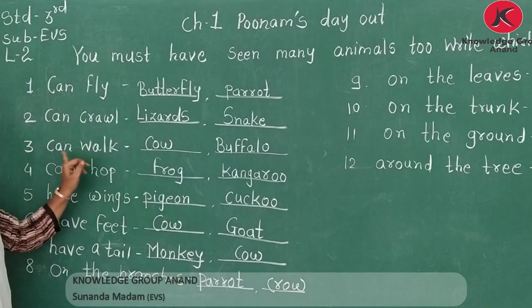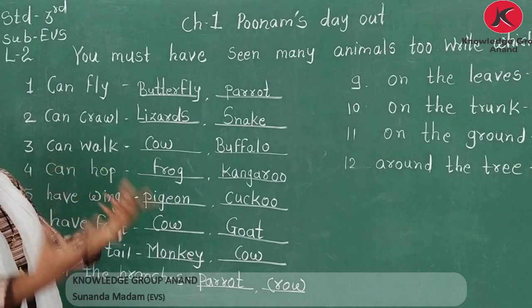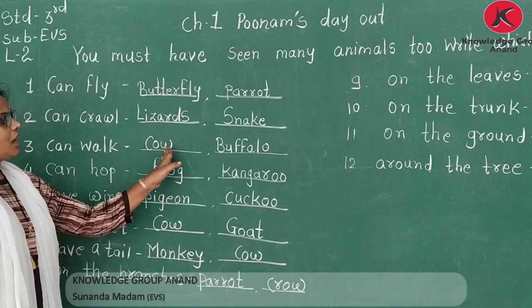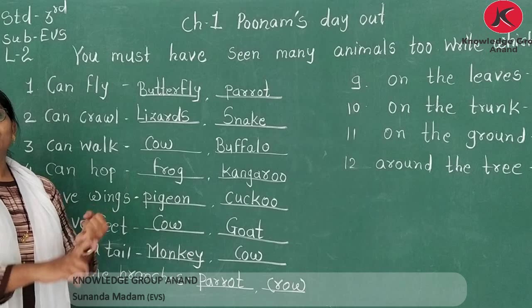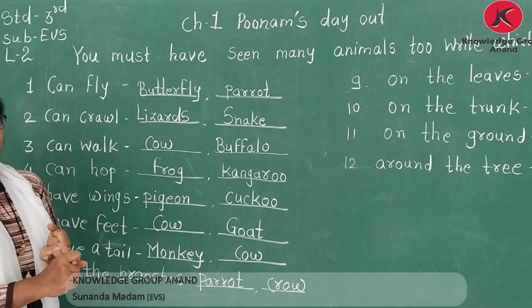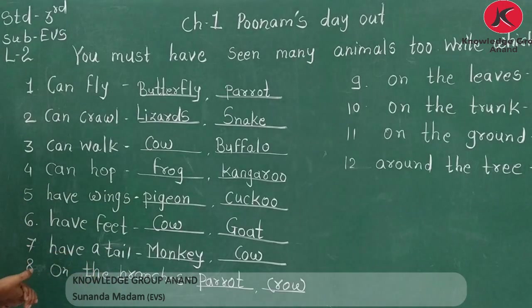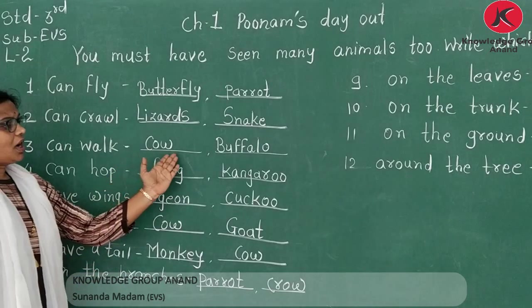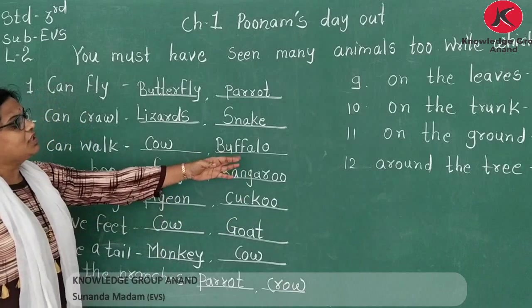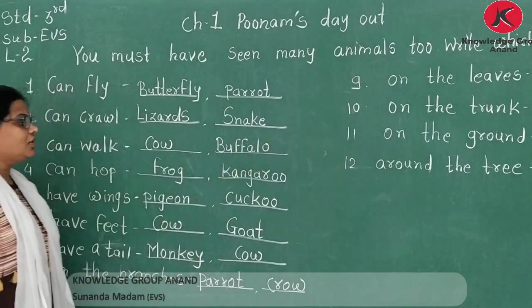Third is 'can walk.' Konse animals walk karte hain? Those animals include cow, buffalo, dog, donkey, horse — bohut saare animals jo walk karte hain. Here cow and buffalo are mentioned. You can also mention more animals that you know.